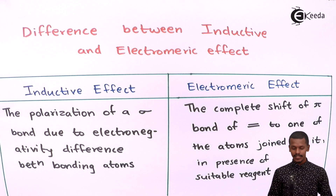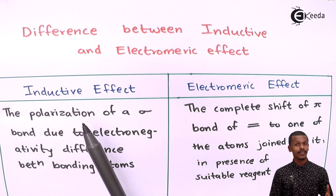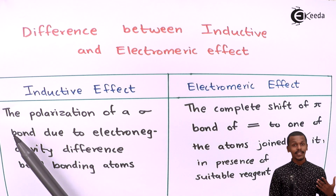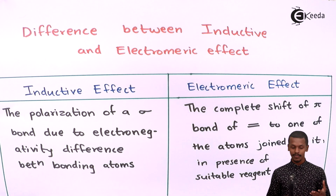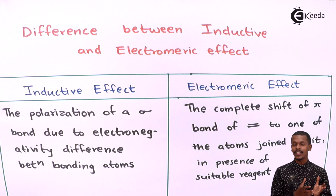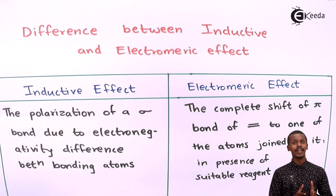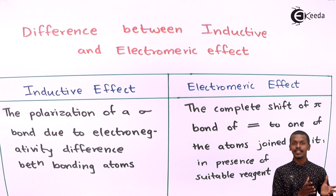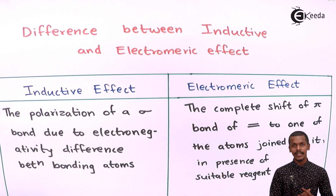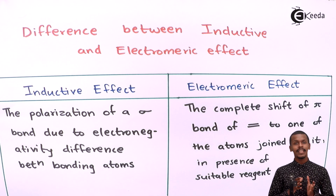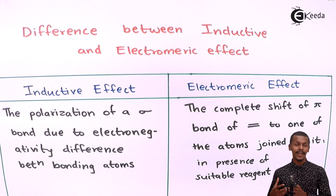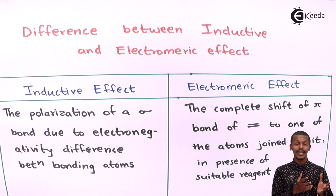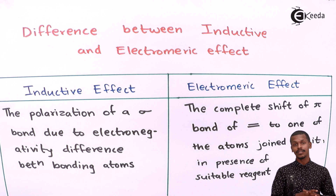Talking about the inductive effect first: it is the polarization of a sigma bond due to the electronegativity difference between the bonding atoms. This is basically known as the inductive effect, and when it comes to a sigma bond, we are talking about a covalent bond. In this case, there is displacement of electron density towards the other atom, depending on the electronegativity of the attached atom in the molecule.